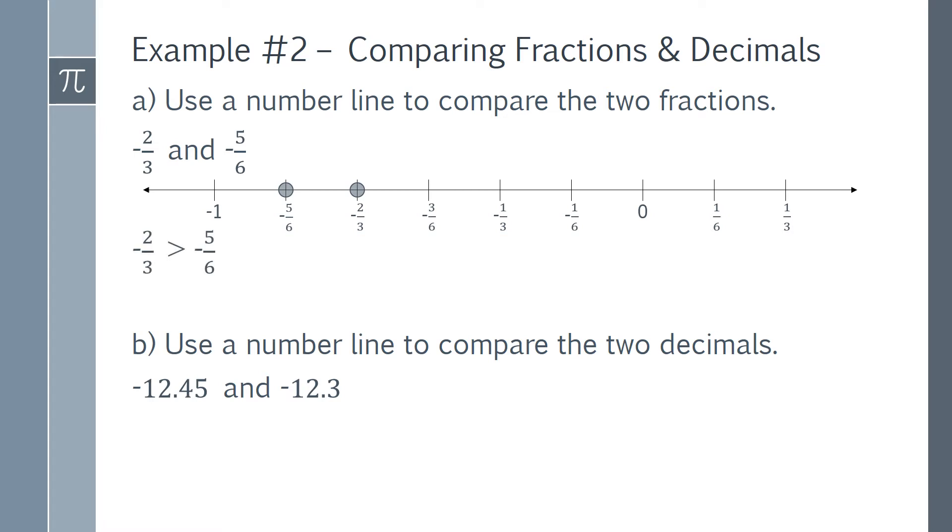So, we know that negative 2 thirds is greater than negative 5 sixths. Remember that this is because the value of the numbers increases as you move to the right on the number line.